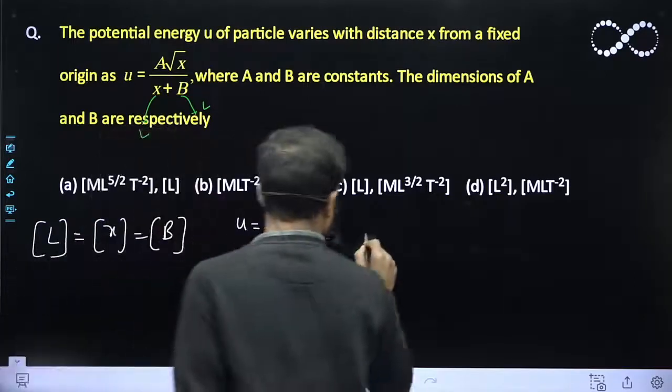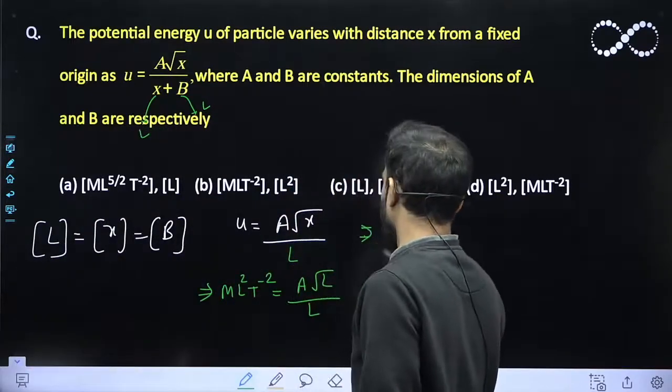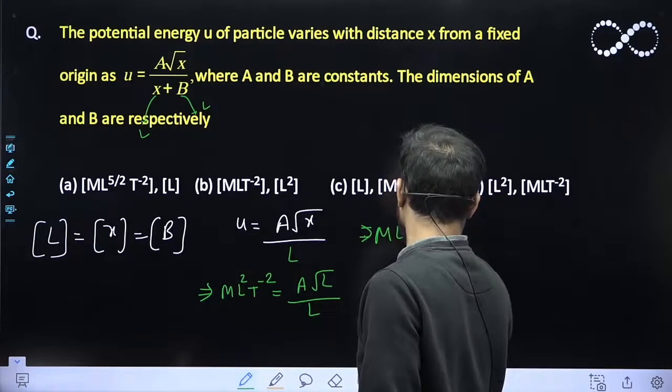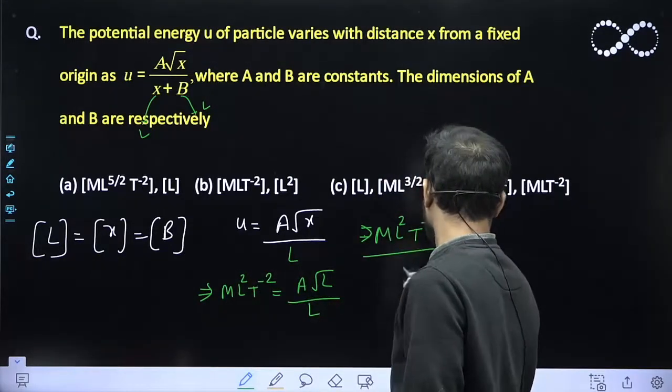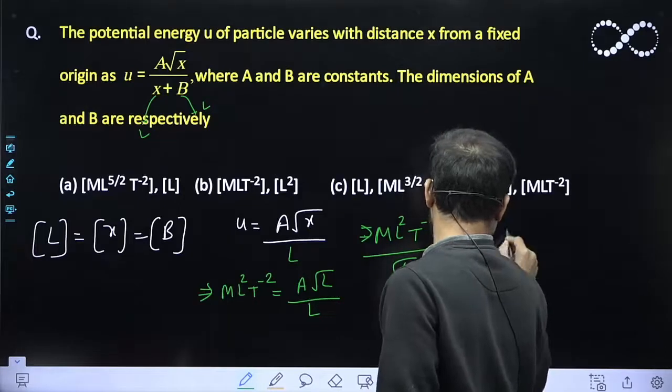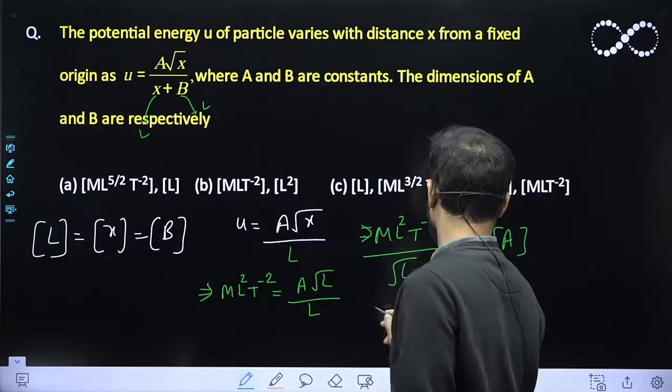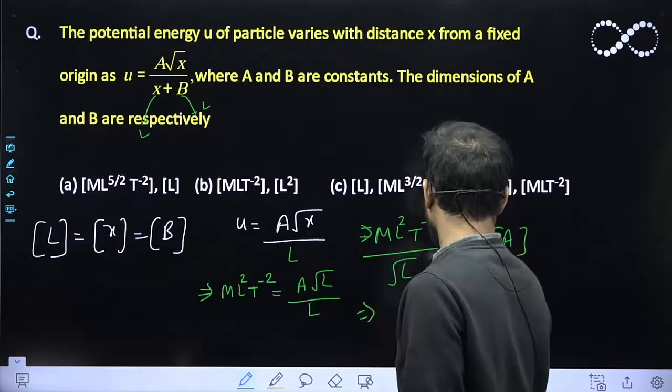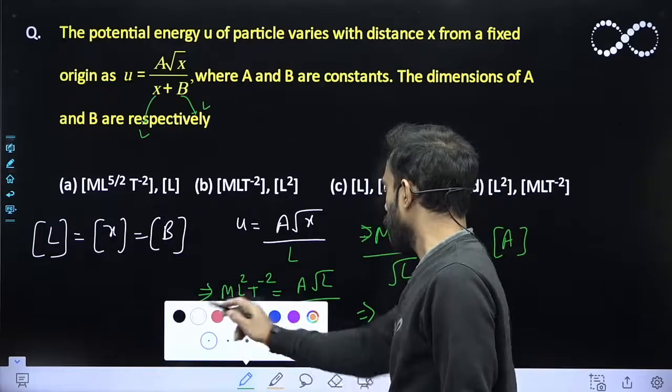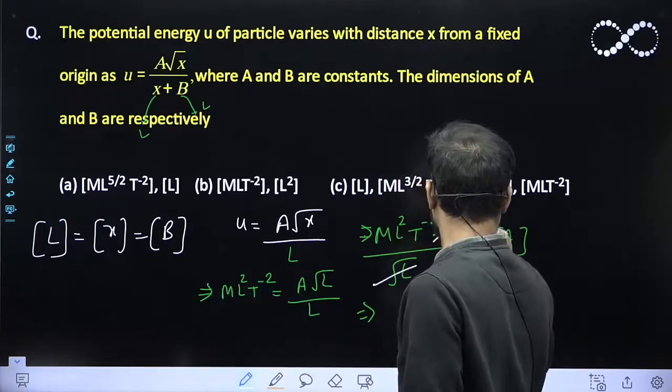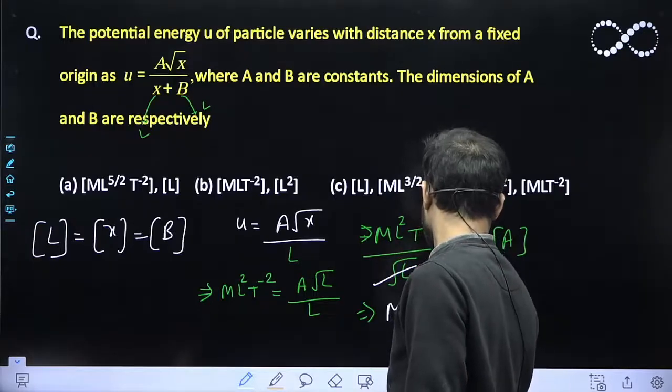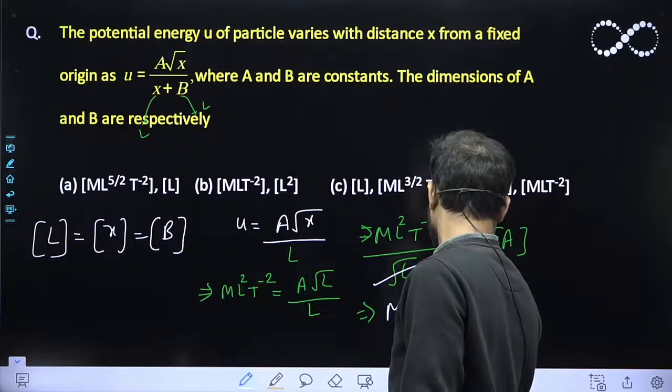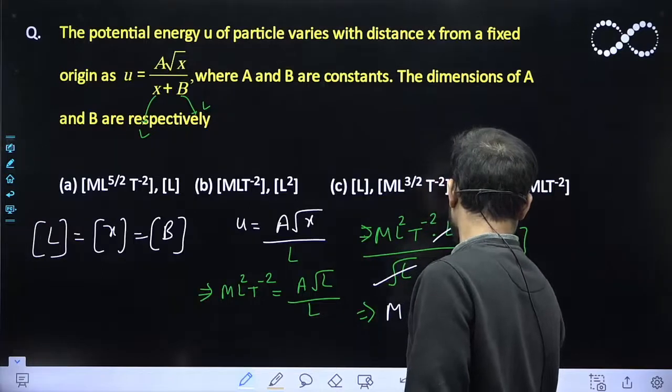From here I can say this will become ML² T⁻² times L, and root L will come to this side to get A. This will be the dimension of A. This L will get cancelled out, and we will get root L here, and this L will get added. So we will get M L^(5/2) T⁻².